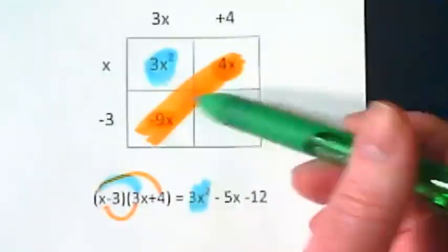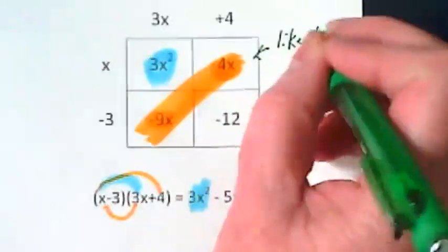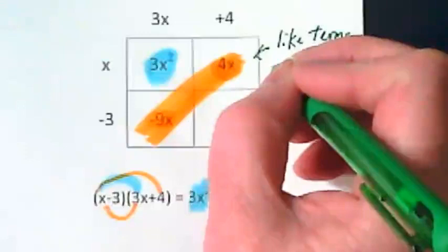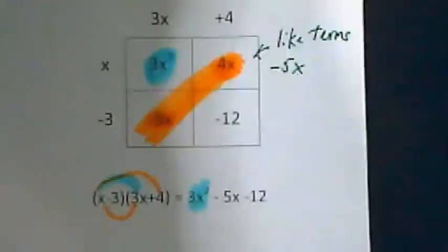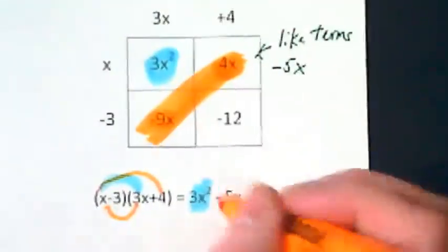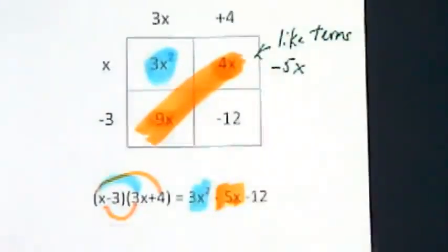When we combine these as like terms, they simplify to negative 5x. Where do you see that negative 5x down below? We call that the center term or the term in the middle.